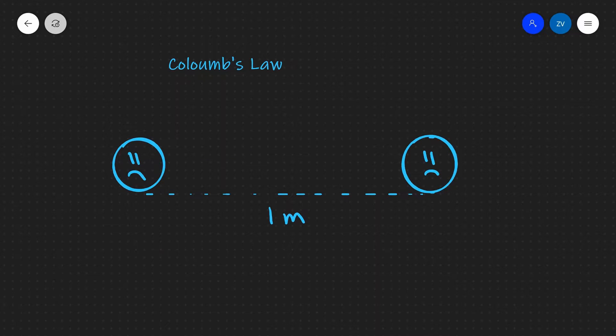What we're going to be discussing today is Coulomb's law. Now let's imagine that we have a couple of electrons, we can see that they're negative and they're separated by a distance of one meter.